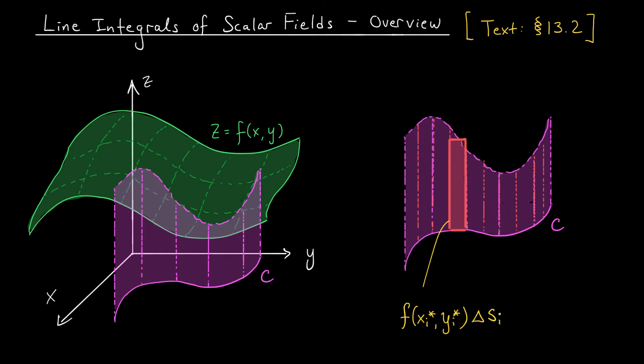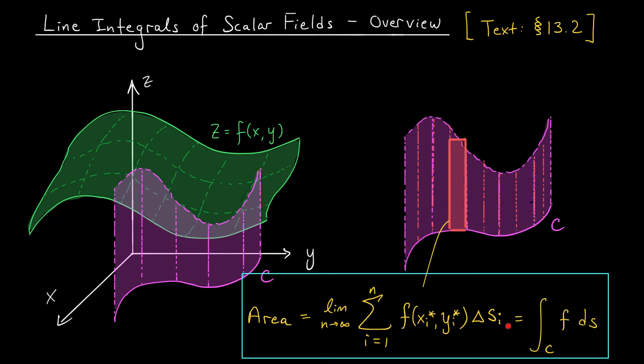This is an approximation of the area of one of our slices. At this point, I think you know the drill, right? We add up the approximations and let the number of slices go off to infinity. That's going to give us the true area of this curtain, the area under our surface and above the curve C. This, folks, is going to be our line integral. We denote it by the integral over C of f ds. ds reminds us that we're adding up over a whole bunch of tiny, tiny arc lengths.